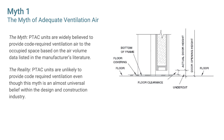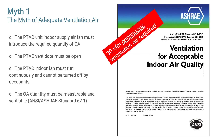Quite often a corridor makeup air system is used to provide ventilation air to guest rooms, relying on an undercut under the guest room door. This is often not allowed and doesn't comply with many building codes, because the undercut must be at least one and a half inches high to allow an adequate amount of ventilation air into the guest room, which interferes with guest privacy concerns among other issues.